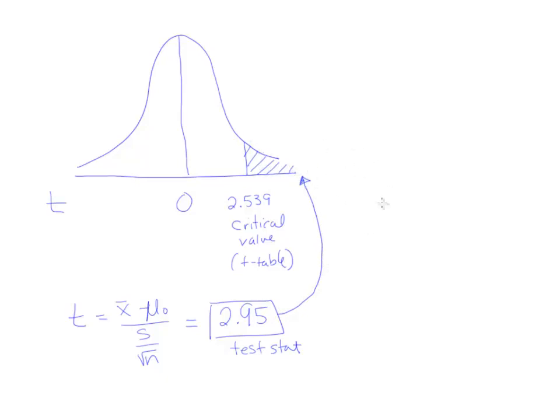Remember, when you land in the shaded rejection region, you decide that you reject H0. And if you reject H0, that means that you support HA.